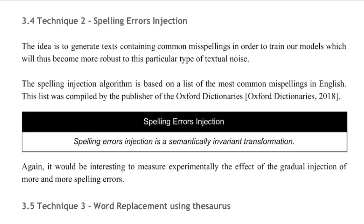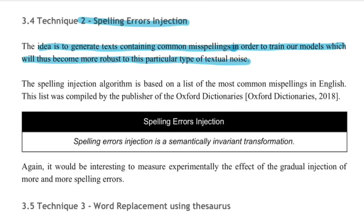The second technique is spelling error injection, where the idea is to generate text containing common misspellings to train models that become more robust to this particular type of textual noise. Injecting wrong spellings for a word still preserves sentence structure and meaning, making it a semantically invariant transformation. It also makes the model robust by not giving too much weight to a specific word spelling, instead learning generic features. Authors use a list of most common misspellings in English from Oxford Dictionaries.